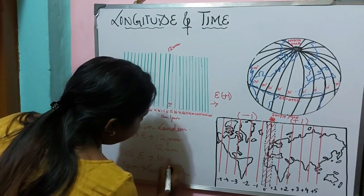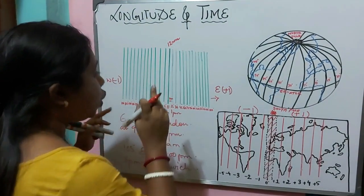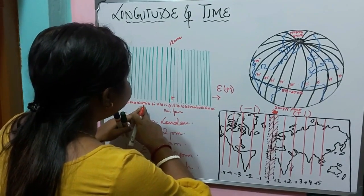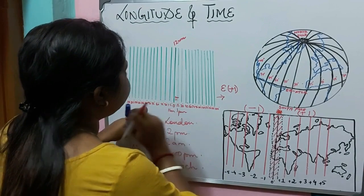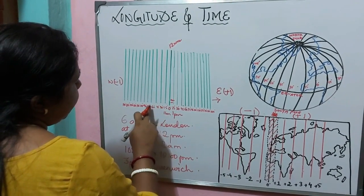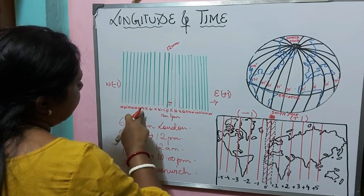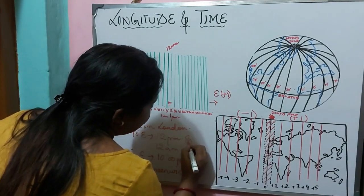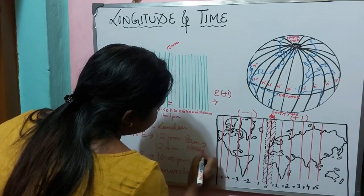At 105 degrees east it will be 10 pm. Then what will be the time at 105 degrees west if it is 3 pm in Greenwich? Subtracting: 2 pm, 1 pm, 12 pm, 11 am, 10 am, 9 am, 8 am — so it will be 8 am at 105 degrees west.